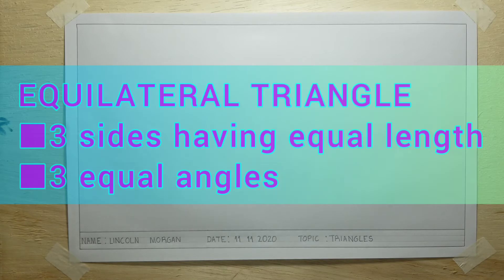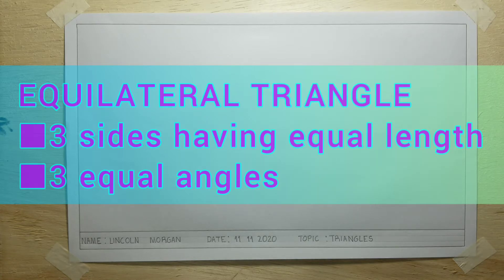Every triangle will have three sides. They will also have three angles. The first triangle we will be looking at today is called an equilateral triangle. From the word equilateral, we can detect that this triangle will consist of three sides having three equal lengths.